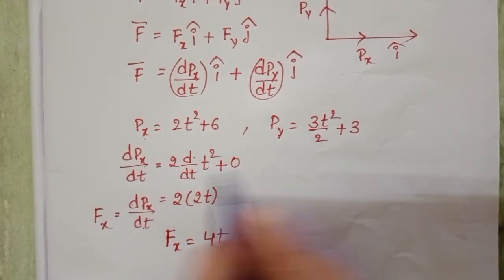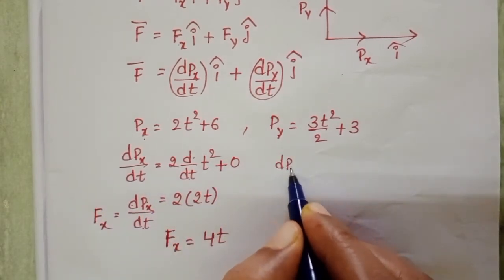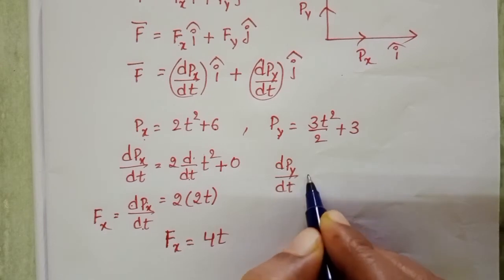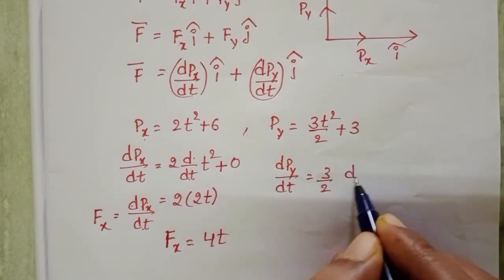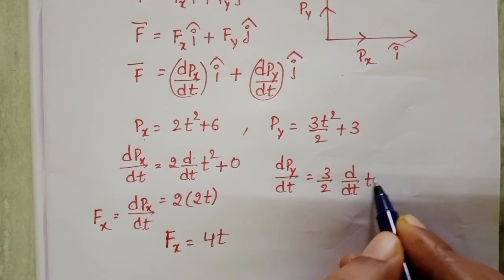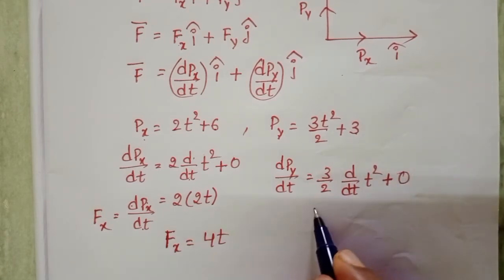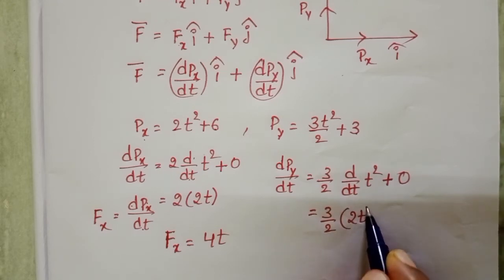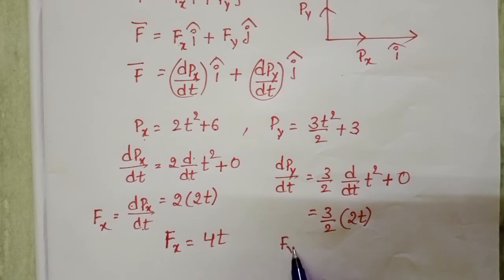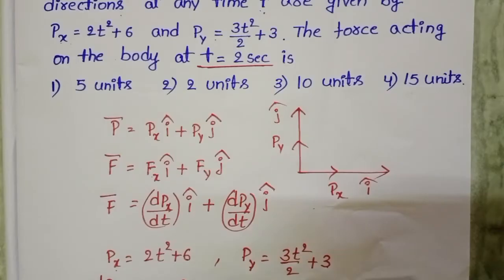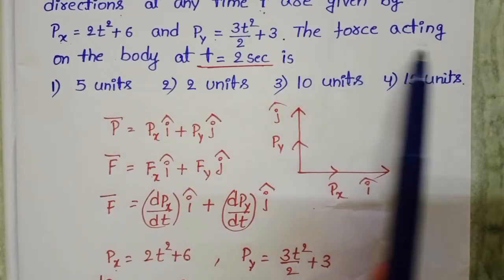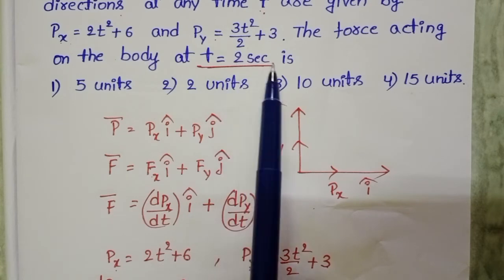Similarly, find dPy/dt. dPy/dt equals d/dt of 3t squared divided by 2 plus differentiation of constant which is 0, giving 3 divided by 2 into 2t. The 2s cancel, so Fy equals 3t.